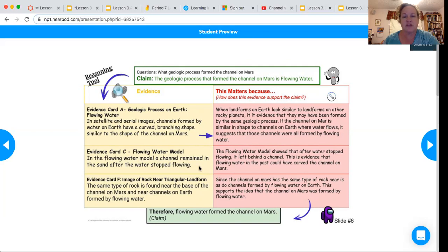So that's the one piece of evidence. And I just noticed there's a couple typos in there. Evidence card C, flowing water model. So that's the one for the stream table.